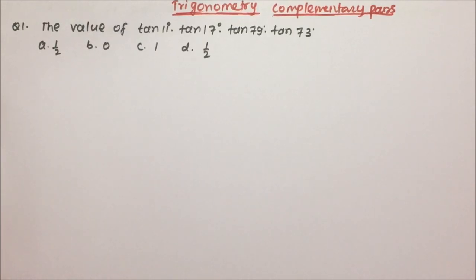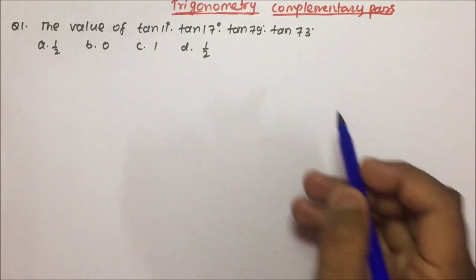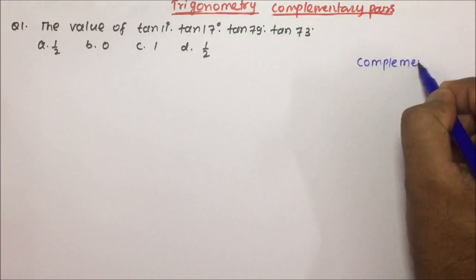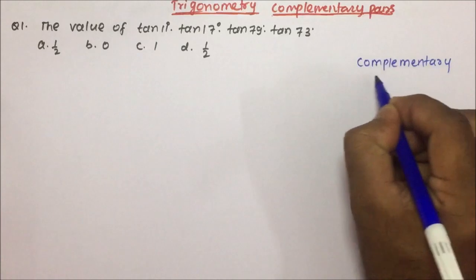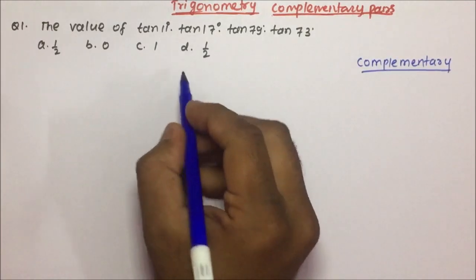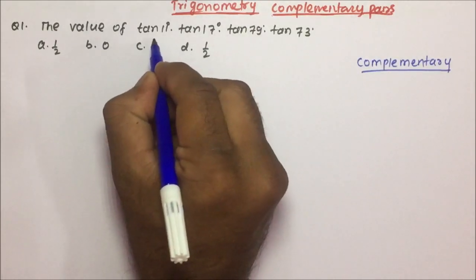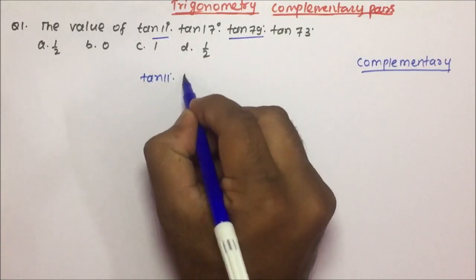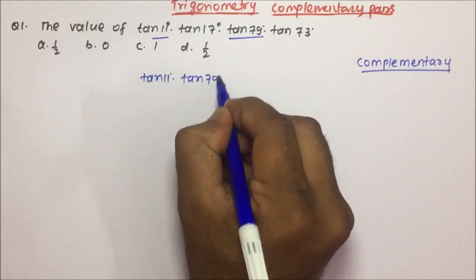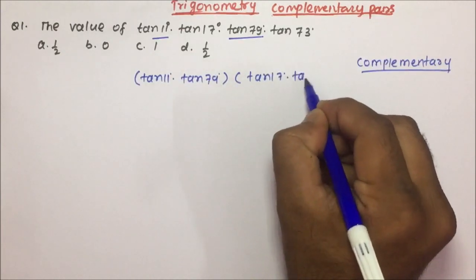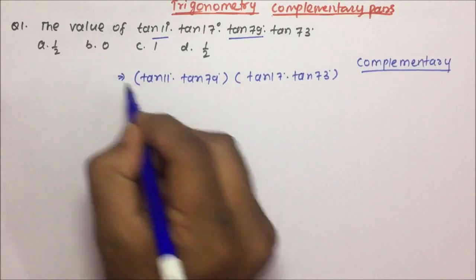Question number one: the value of tan 11 × tan 17 × tan 79 × tan 73. We have to search for the complementary pairs — complementary pairs means two angles should add up and give you 90 degrees. You can see here 11 and 79. So tan 11 × tan 79, I will keep at one place, and then tan 17 × tan 73, we will club together.